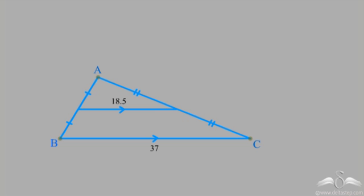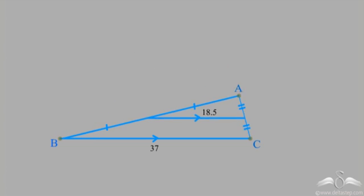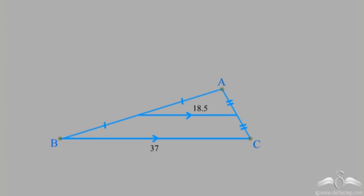So here, if this is the midpoint of AB and this is the midpoint of AC, I join the midpoints to get the midsegment. This midsegment is parallel to the third side BC. Also it is half of BC — if BC is 37, then half of 37 is 18.5. The midsegment depends on the third side BC; it is half of BC and always parallel to it.